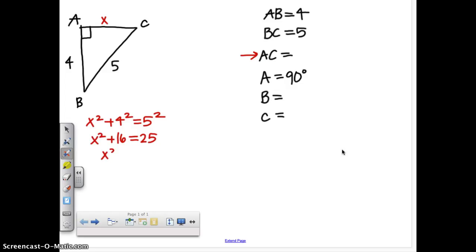So then X squared equals 9, and X equals 3. We would subtract 16 from both sides, take the square root. You all know how to do that. I'm not worried about you. AC is 3.